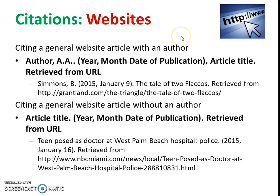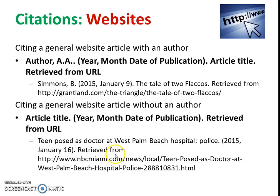Today we get more and more of our information from the internet and various websites, so we have to reference that as well. It follows a similar format: the author, the date — and here we often have not only the year but also the full date — the name of the article or website, and we add 'retrieved from' followed by the URL. Sometimes we don't have an author, so we write the name of the article, the date, and again 'retrieved from.' In that way, we cite where we got our information from the internet.